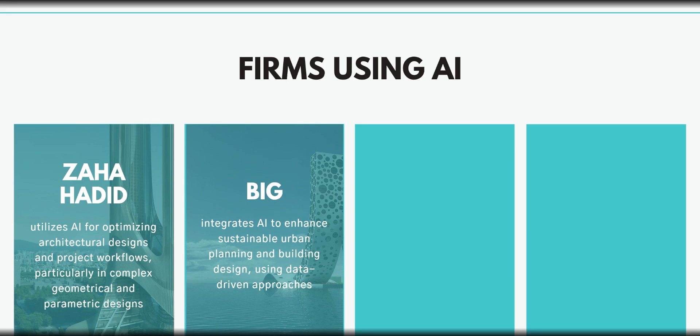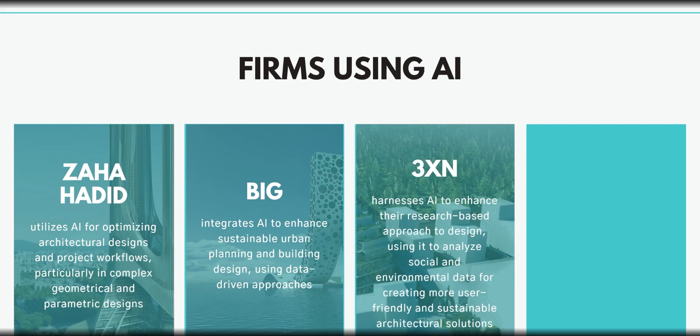Next, at BIG, they're integrating AI to enhance sustainable urban planning and building design using data-driven approaches. You can see that they're exploring the boundaries with their projects, but they're also making sure to address important concerns — so it's not just letting the AI generate whatever. They're actually putting it toward an applied architecture design process. 3XN is also using AI, harnessing it to enhance their research-based approach to design, using it to analyze social and environmental data for creating more user-friendly and sustainable architecture solutions.